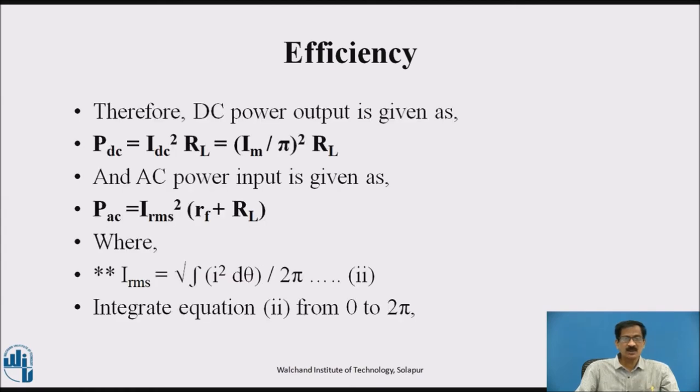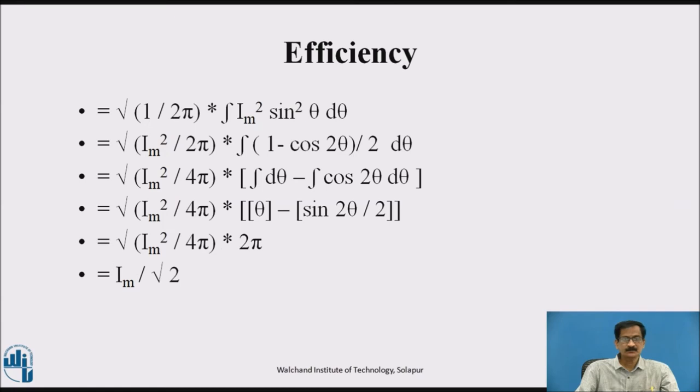DC power equals I average squared times RL. Now, to find out the AC power, we must find out the RMS value. I RMS can be given as square root of integration of I square d theta upon 2 pi. Integrating above equation from 0 to 2 pi, I RMS equals square root of 1 upon 2 pi integration of I square M sin square theta d theta. We will use 1 minus cos 2 theta upon 2. By solving this integration, we got finally I RMS equals Im upon root 2, that is 0.707 Im.